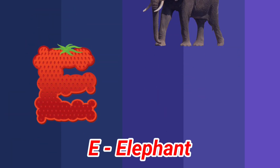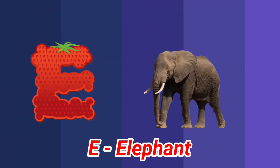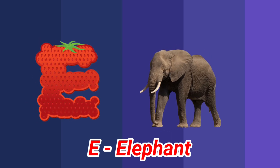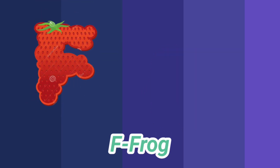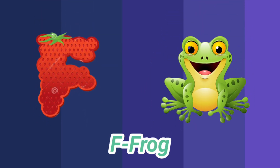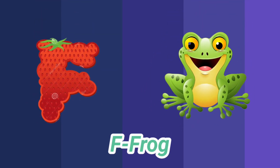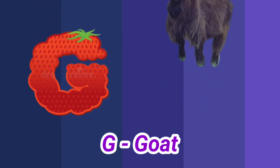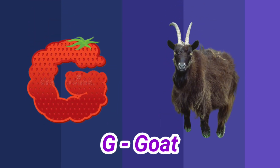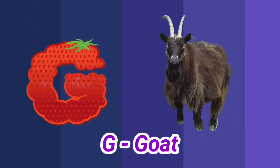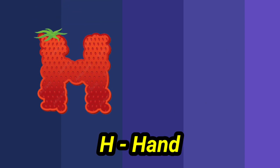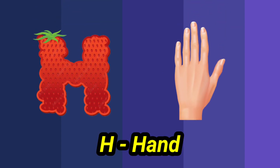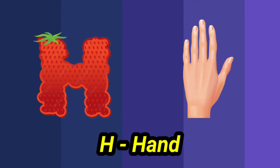E is for elephant, e-e-elephant. F is for frog, f-f-frog. G is for goat, g-g-goat. H is for hand, a-a-hand.